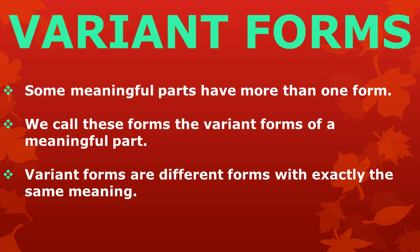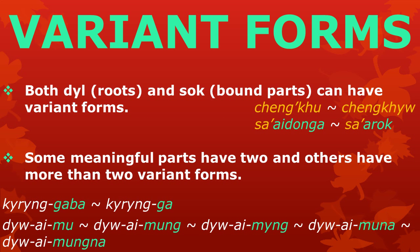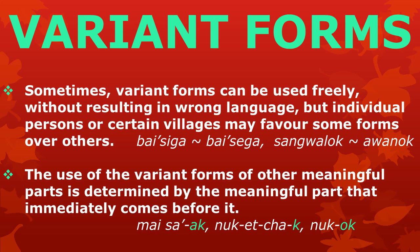In this lesson, we have learned that some meaningful parts have more than one form. We call these forms the variant forms of a meaningful part. Variant forms are different forms with exactly the same meaning. Both del and sok can have variant forms. Some meaningful parts have two, and others have more than two variant forms. Sometimes variant forms can be used freely without resulting in wrong language, but individual persons or certain villages may favor some forms over others. The use of variant forms of other meaningful parts is determined by the meaningful part that immediately comes before it.